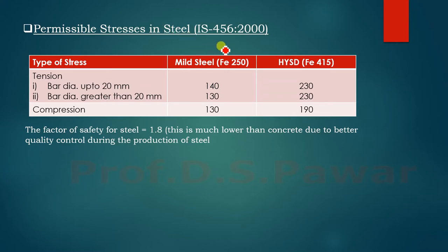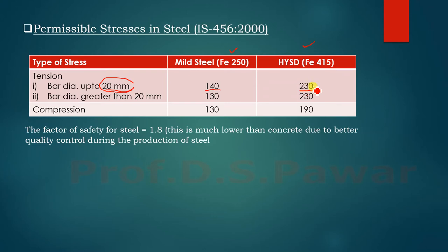Permissible stresses in steel are also given in IS 456. For mild steel (Fe 250) and HYSD steel (Fe 415 and Fe 500): in tension, for bars up to 20 mm diameter, mild steel stress is 140 N/mm² and for Fe 415 and Fe 500 it is 230 N/mm². For bar diameter greater than 20 mm, mild steel stress is 130 N/mm² and for Fe 415 and Fe 500 it remains 230 N/mm². In compression, the stresses are reduced: 130 N/mm² for mild steel and 190 N/mm² for Fe 415 and Fe 500.